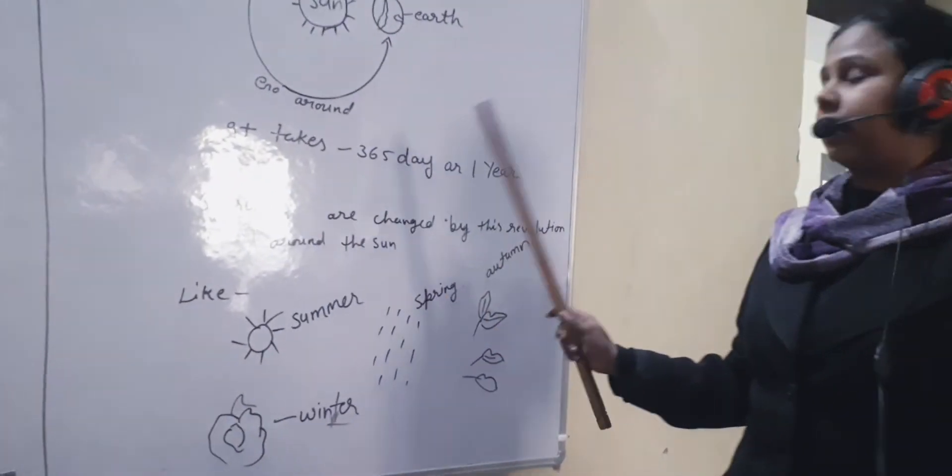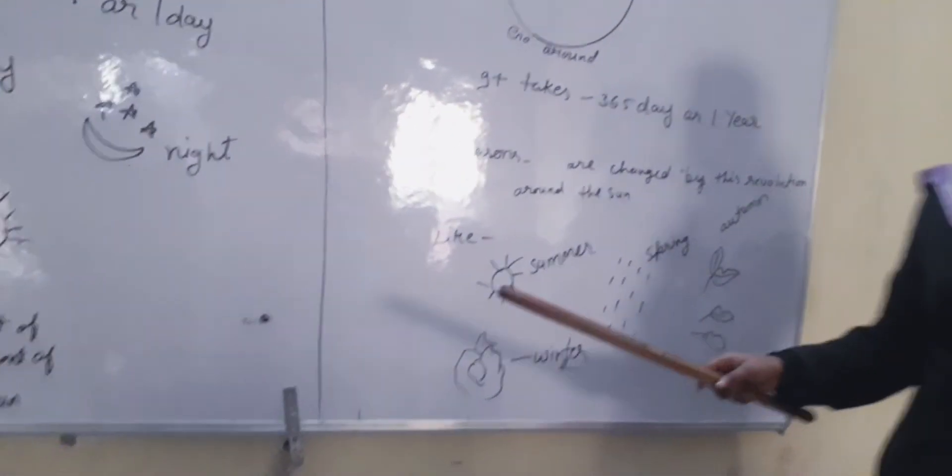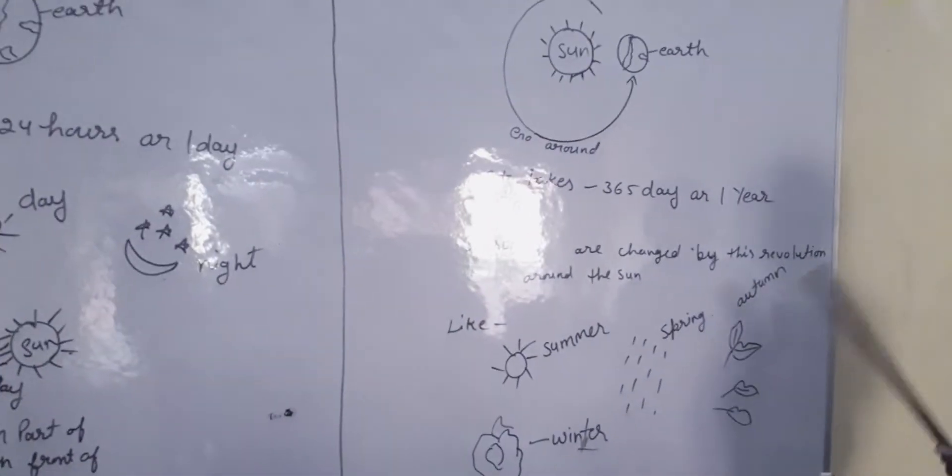The seasons, climates, and weathers are changed by this revolution around the sun. Like summer, spring, autumn, winter.